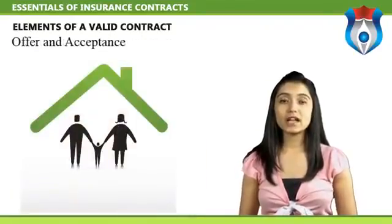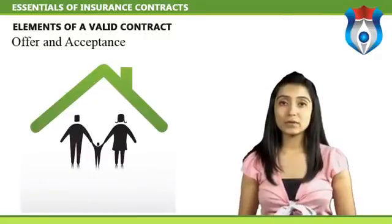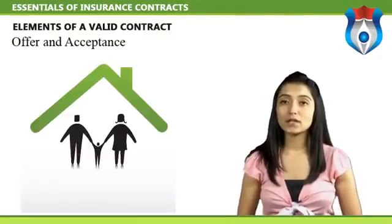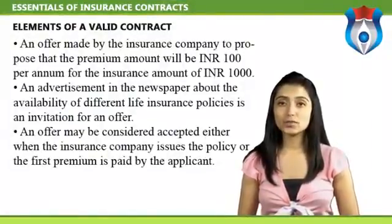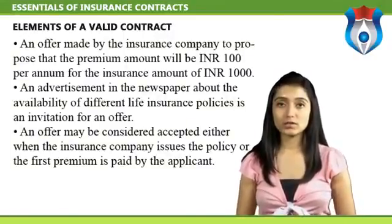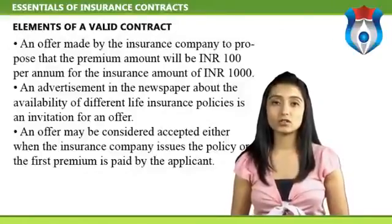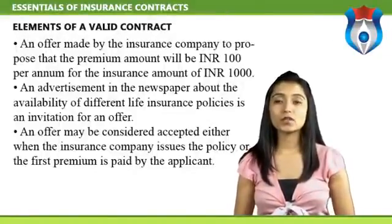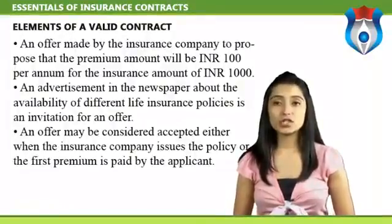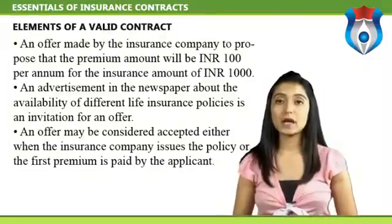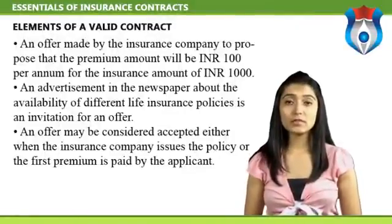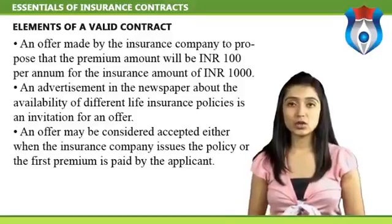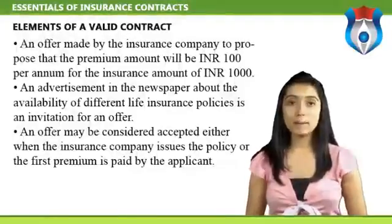Offer and acceptance: in life insurance, an offer can be made either by the insurance company or the applicant, and the acceptance will follow. For example, an offer made by the insurance company may propose that the premium amount will be one hundred rupees per annum for an insurance amount of one thousand rupees — it is for the proposer to accept the offer or not. An advertisement about the availability of different life insurance policies is an invitation for an offer. An offer may be considered accepted either when the insurance company issues the policy or the first premium is paid by the applicant.